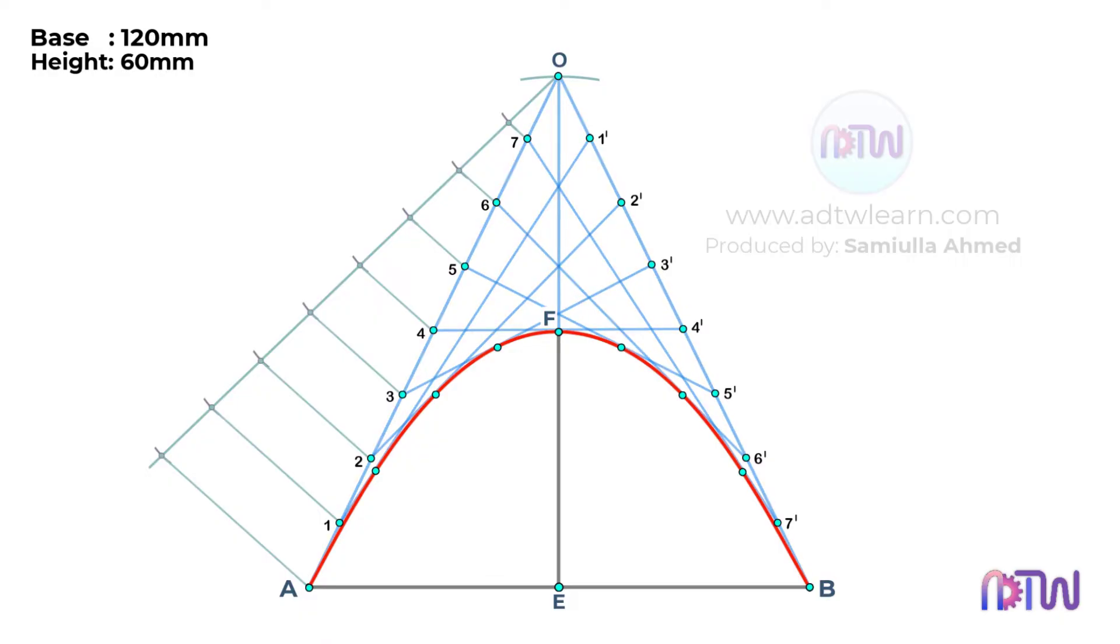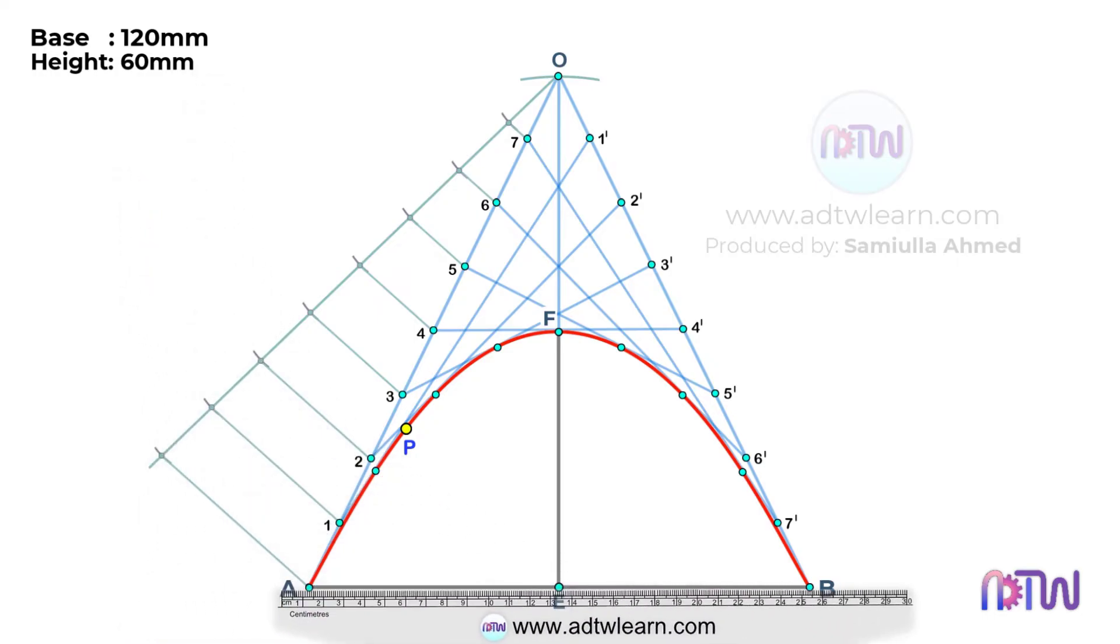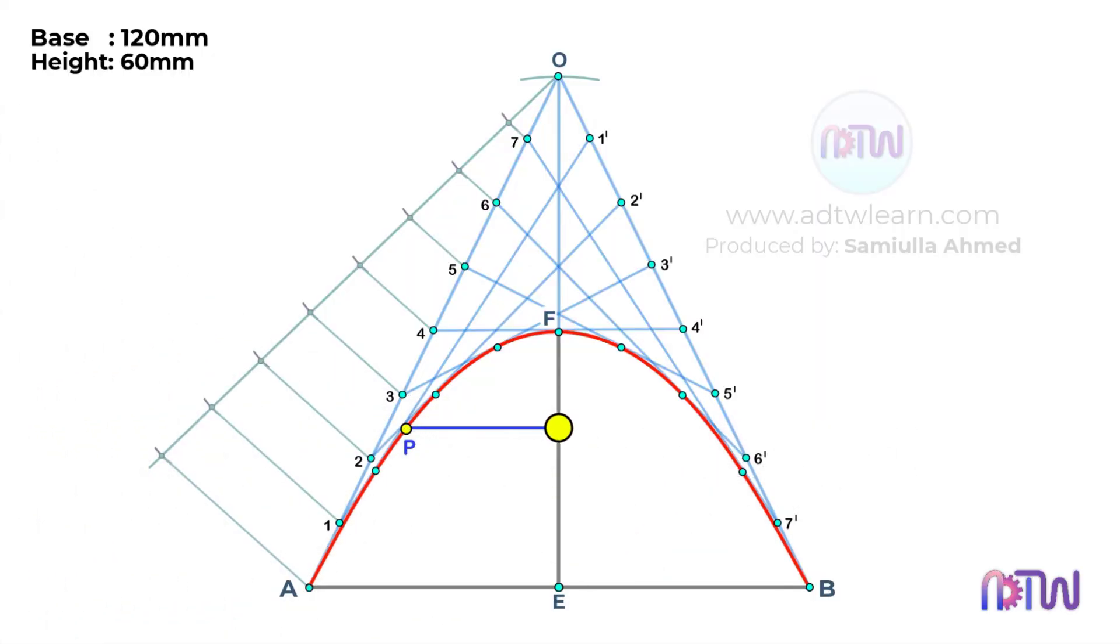After this, we need to draw a tangent and a normal to this parabola. Suppose we want to draw a tangent and a normal at this point P. To do so, take a roller scale and using line AB as a reference, draw a horizontal line from this point P. Label this point as P dash.